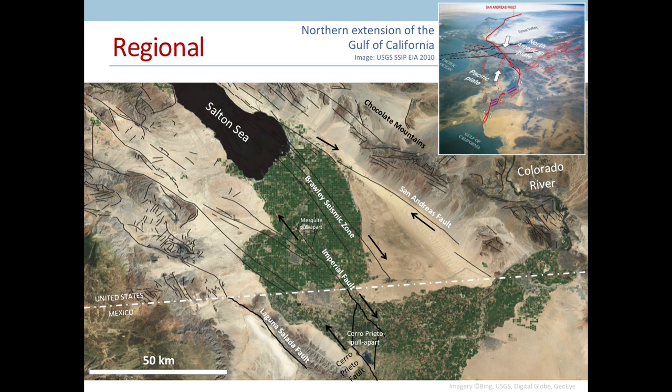Here are some salient features of the regional setting. The project lies in the Salton Trough, which is the northern extension of the Gulf of California rift, shown here in the top right. The project is at the northwestern end of the Mesquite Basin, a small pull-apart basin above an active rift. The rifting is at a step-over system from the San Andreas Fault to the Imperial Fault. It's a major strike-slip zone.